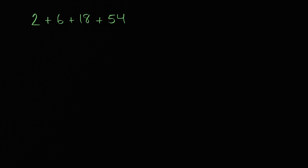Let's see, maybe it's a geometric. So to go from two to six, what are we doing? Well, we're multiplying by three. To go from six to 18, what are we doing? Well, we're multiplying by three. To go from 18 to 54, we're multiplying by three. So it looks like this is indeed a geometric series, and we have a common ratio of three.